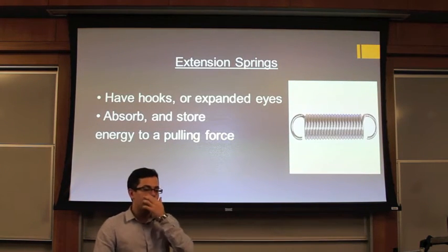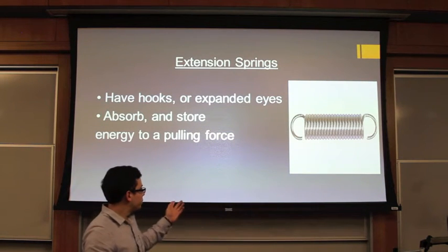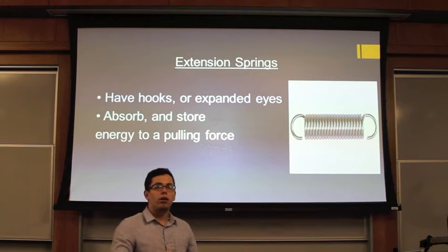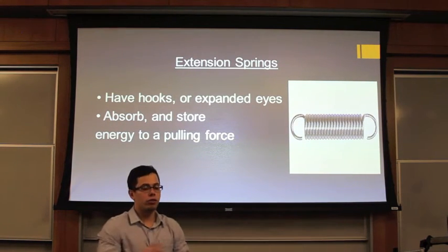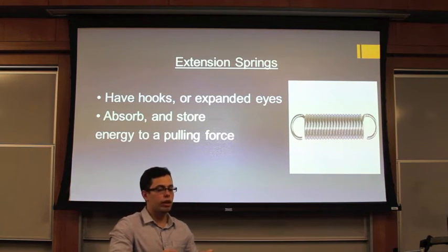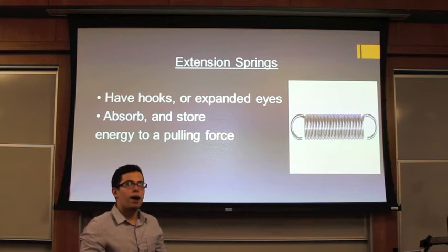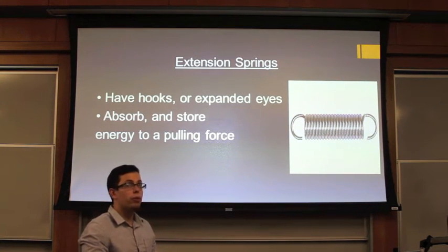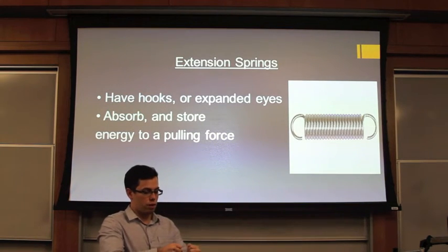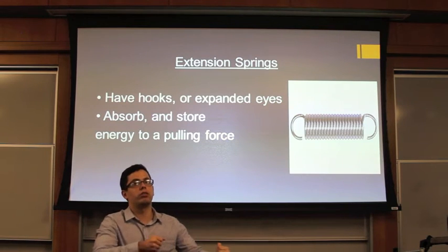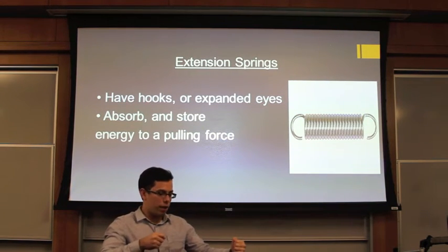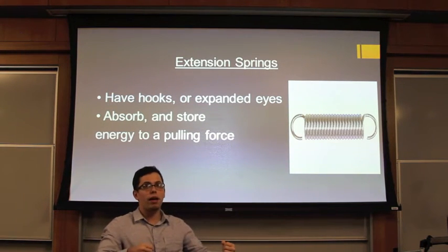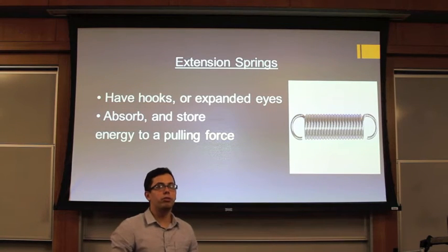Another type of helical springs are extension springs. This type of spring has a hook or an eye — a circular eye — on each end in order to connect the components. They can absorb energy from a pulling force. You're pulling a force on the central axis, and after applying that force, the spring tries to apply an opposite force to bring the component back to its original position.